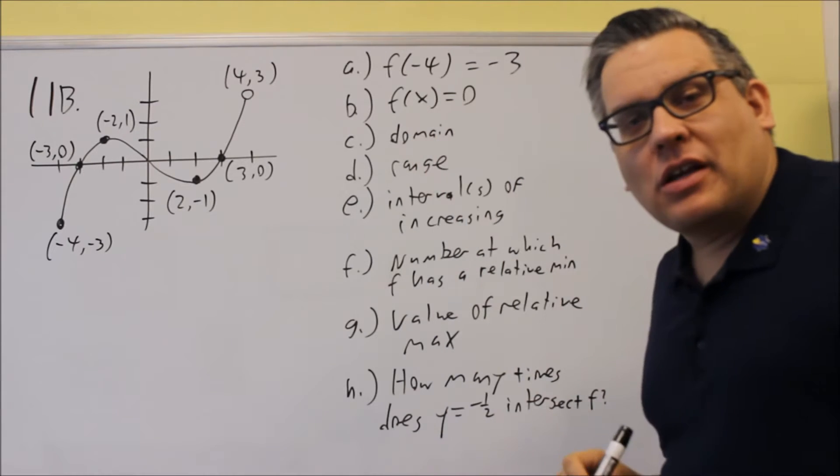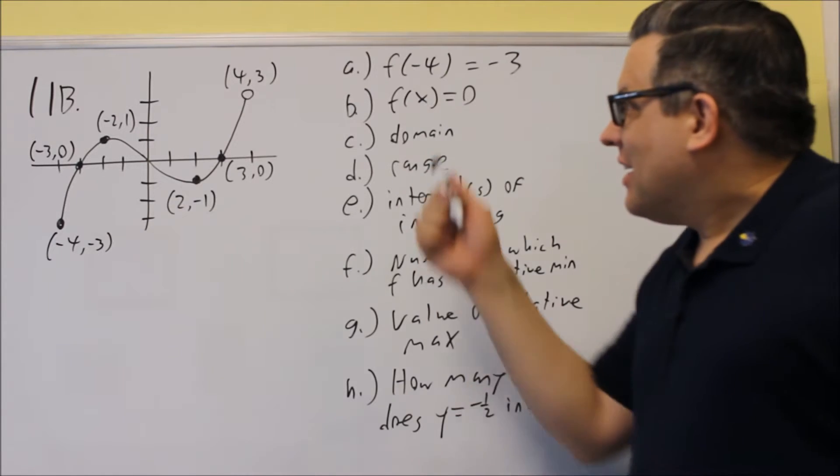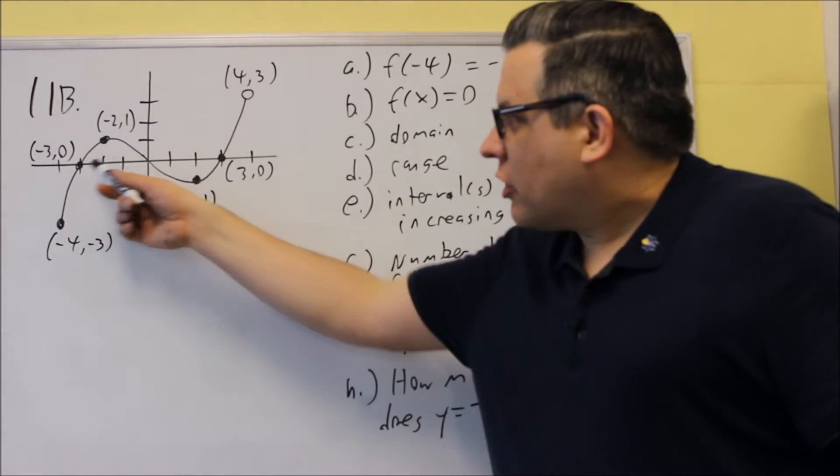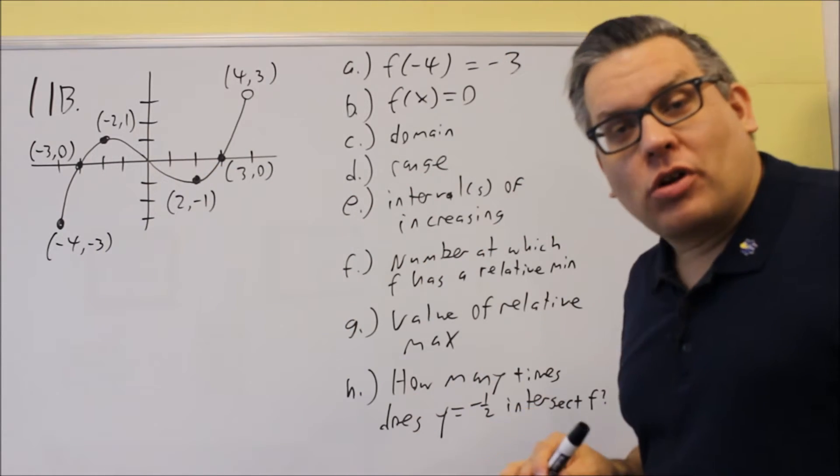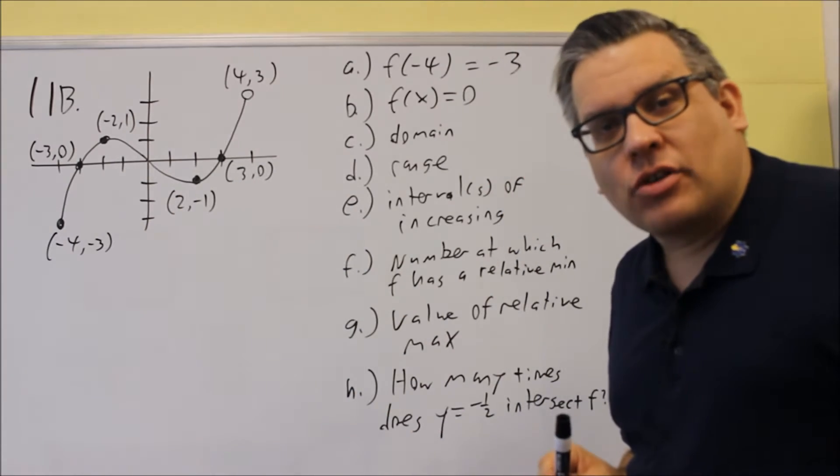Now, for b, they want you to find all x such that your f(x) is equal to 0. So it's saying any x value where the y value is 0. Now, if you look at this particular picture, the way it's printed on the test, there's no dot there at (0, 0).